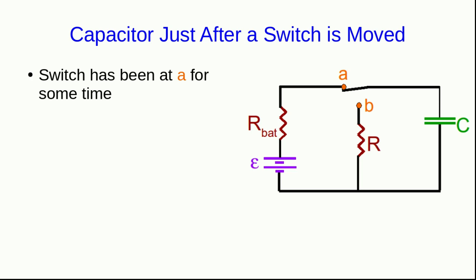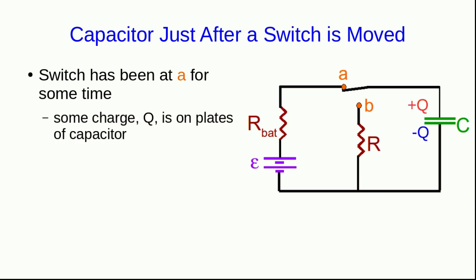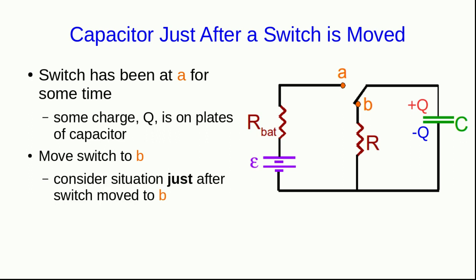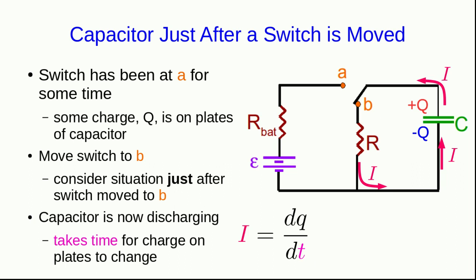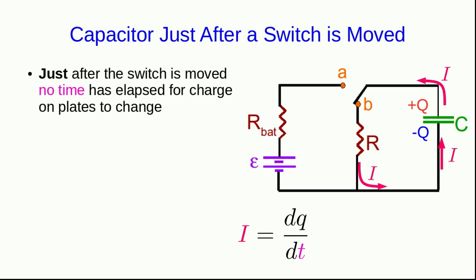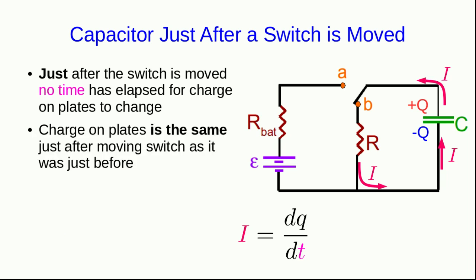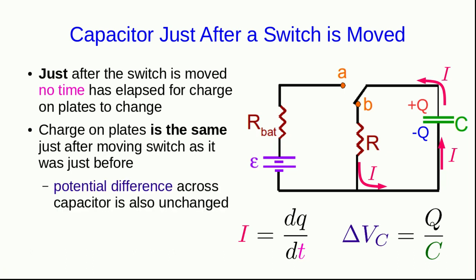Let's think about a capacitor just after we move a switch. The switch has been at A for some time, and we know there will be some amount of charge on the plates of the capacitor. When we move the switch to B, the capacitor is discharging and current is running. That current is a rate at which charge is being transferred — a finite rate. It takes some time for the charge on the plates to change, so just after we've moved the switch no time has elapsed for charge to change. The charge on the plates must be exactly the same as it was just before we moved the switch. Similarly, the charge is proportional to the potential difference between the plates, so the potential difference across the capacitor is also exactly what it was just before we moved the switch.